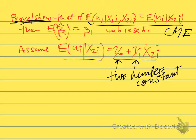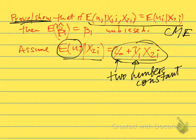Saying that the expected value of uᵢ depends on x2 means that as x2 changes, the error changes. That's what it means to say the expected value of uᵢ depends on x2 and is not equal to zero. Remember, that's our whole problem — the expected value of the error term is not equal to zero. So for convenience we'll assume it's a linear function of x2. That's step one.